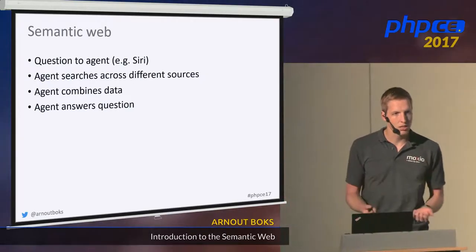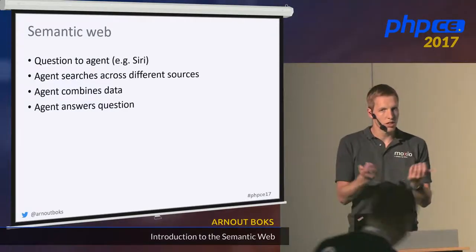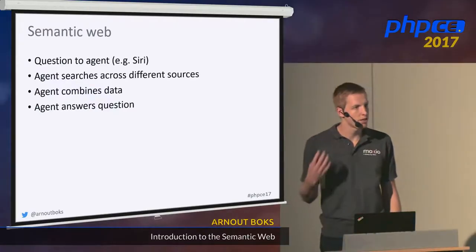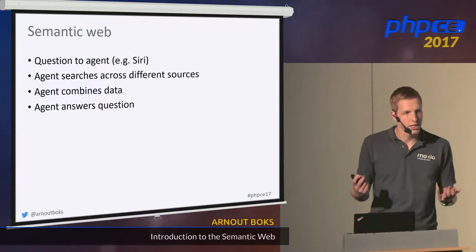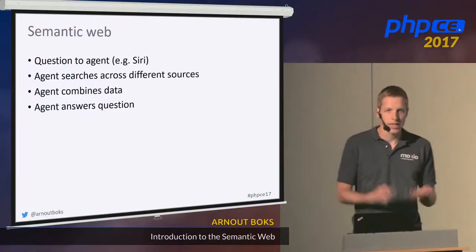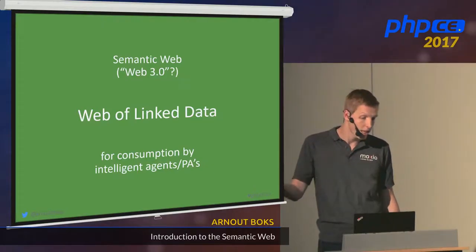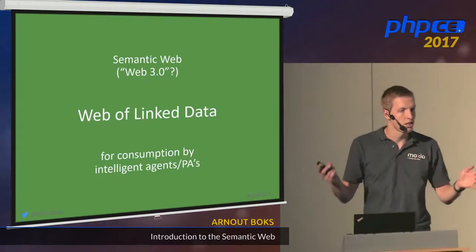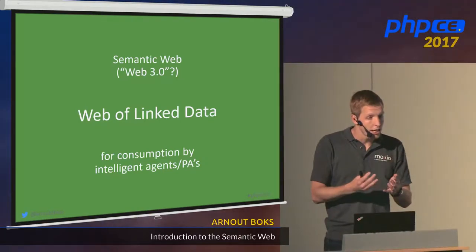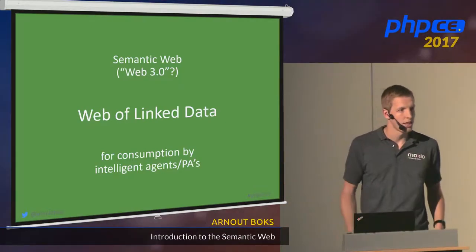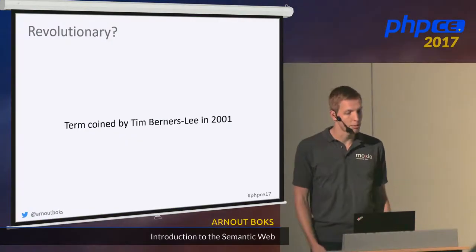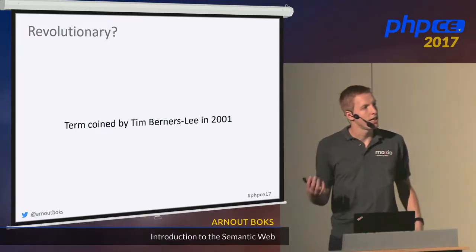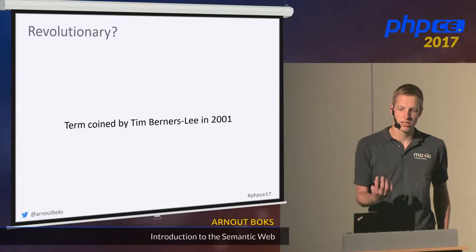The Semantic Web is what aims to solve this problem. With the Semantic Web, you would just ask your question to a smart agent or PA on your phone, like Siri. You would just ask: 'What's the weather like at the place where Ed Sheeran will give his next concert?' Then that agent will search the web across all kinds of different sources, combine its data, reason about it, and answer your question. That's what's called the Semantic Web — also sometimes Web 3.0 — and it's a web of linked data, meant for consumption by intelligent agents.